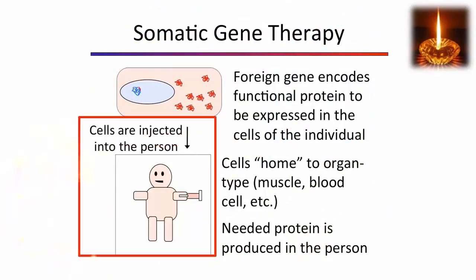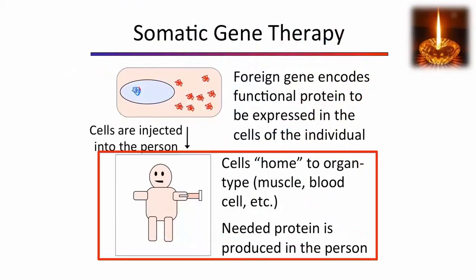The cells are grown and then injected into the individual where they home. They go to the organ type — blood or muscle, for example — to produce the missing protein for the person.